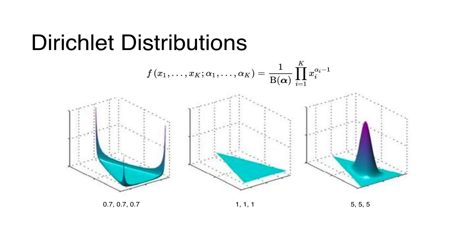If you like formulas, this is the probability density function of Dirichlet distributions, where we don't have a single parameter alpha — it's a parameter alpha for each one of the corners. B(alpha) is just a continuous version of a multinomial coefficient.